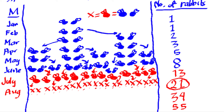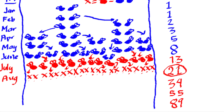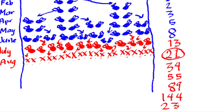So how many pairs will there be in one year? The sequence continues: 1, 1, 2, 3, 5, 8, 13, 21, 34, 55 — and for December we add 55 and 89 to get 144. Then for the flip into next year, we add 144 and 89 to get 233. So after one year, there will be 233 pairs of rabbits — answering Fibonacci's puzzle.